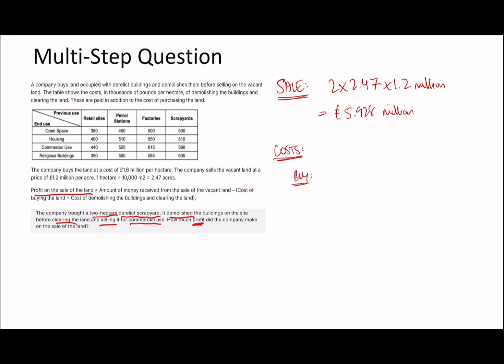Now for our costs. First, buying the land: it says the company buys at a cost of £1.6 million per hectare, so that's £1.6 million times 2 because we bought 2 hectares, which is £3.2 million — you don't need a calculator for that one. Then we have to add demolishing the buildings and clearing the land, which I'll call 'works'.